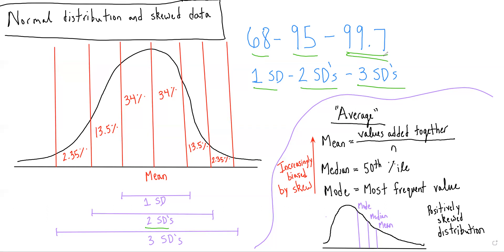Another commonly tested concept related to the normal distribution is how our average value is biased in the setting of skewed data. It's important to understand that when we say average, there are really three things that fall under this umbrella: the mean, the median, and the mode.